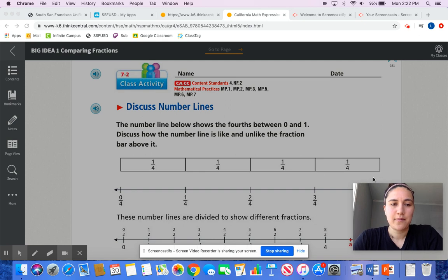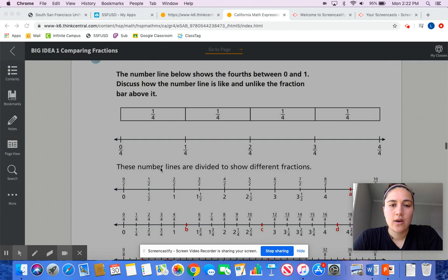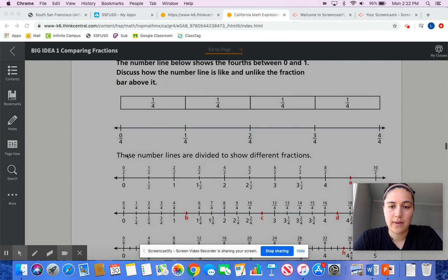Good morning, fourth grade. Today I'm going to walk you through 7.2 in math, which is about number lines and fractions that are on a number line. Some of you guys are going to start seeing 7.2 on your Think Central, and it's a confusing topic, so let's go over it.